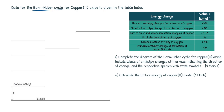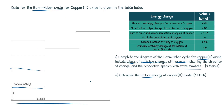Let's read the question. Data for the Born-Haber cycle for Copper 2 Oxide is given in the table below. Complete the diagram of the Born-Haber cycle for Copper 2 Oxide, including labels of enthalpy changes with arrows indicating the direction. I'll show you how to do that. Also include the respective species with state symbols — state symbols are super important for Born-Haber and thermodynamics. Next up, calculate the lattice energy of Copper 2 Oxide, sometimes referred to as lattice enthalpy. So pause the video, attempt the question, then let's go through it together.